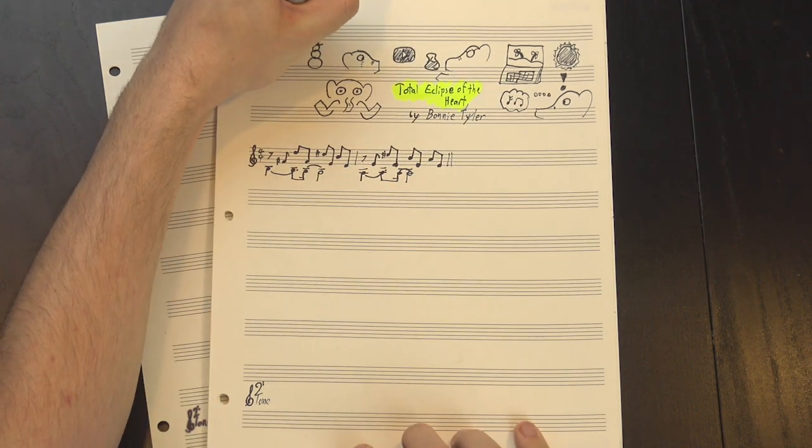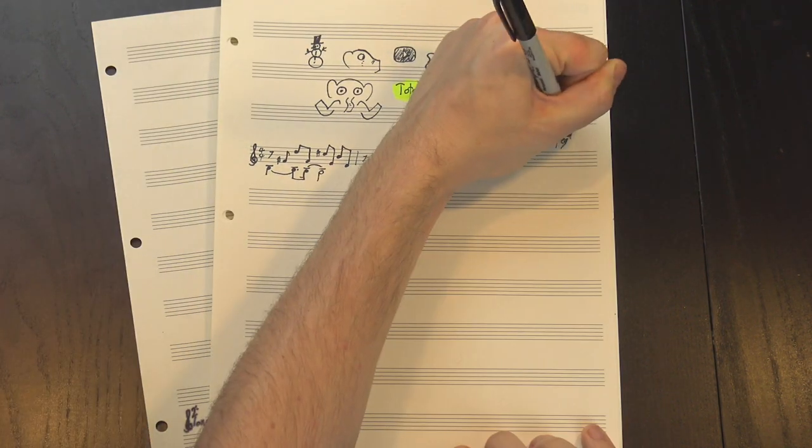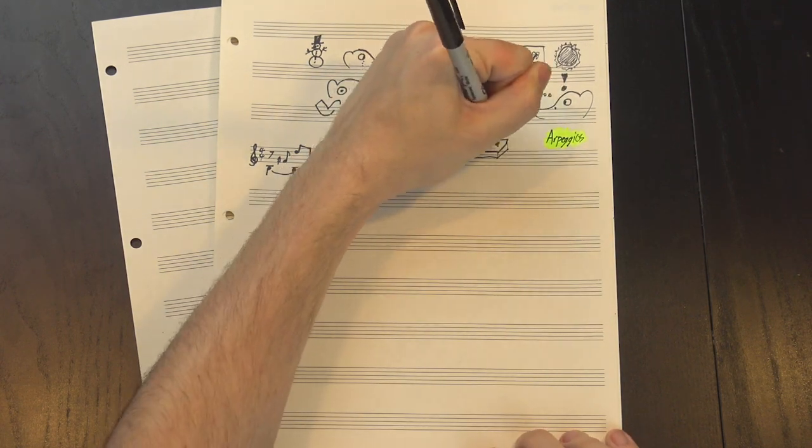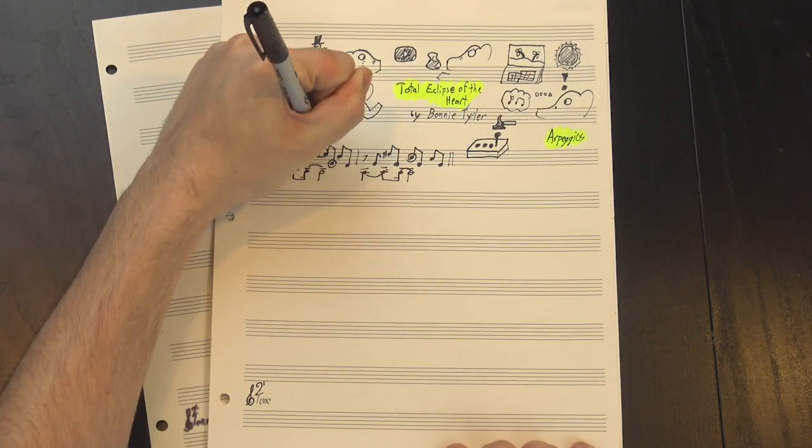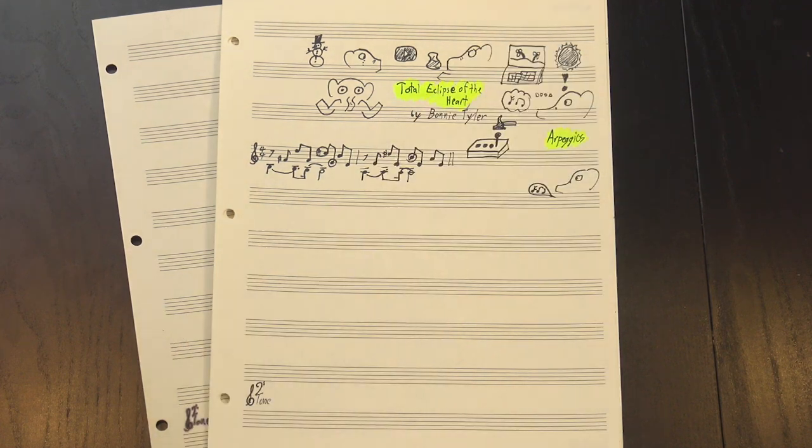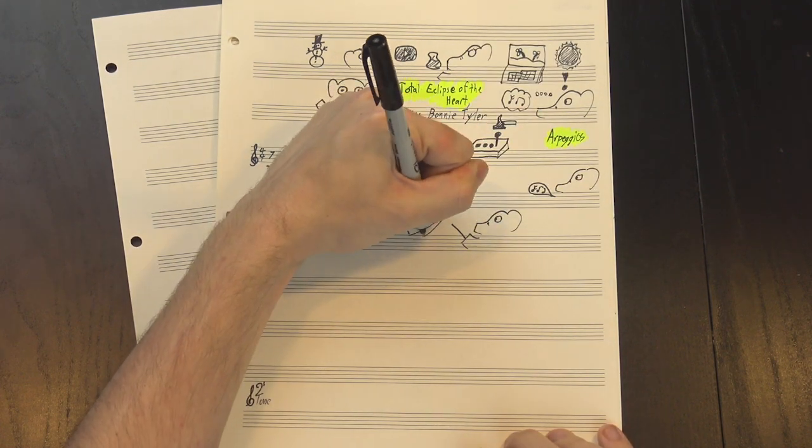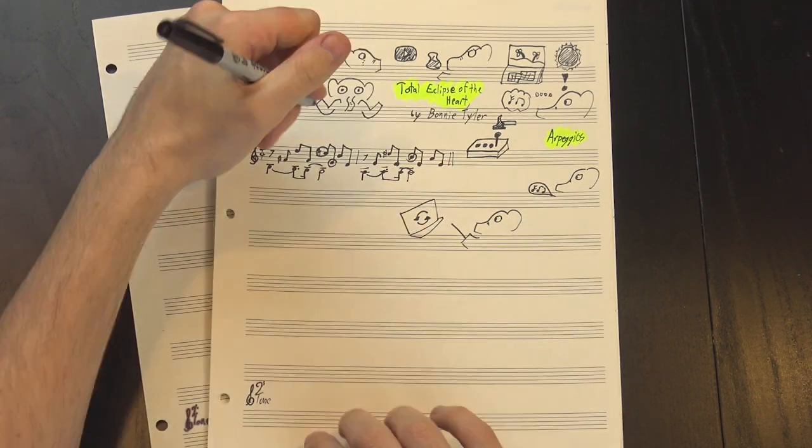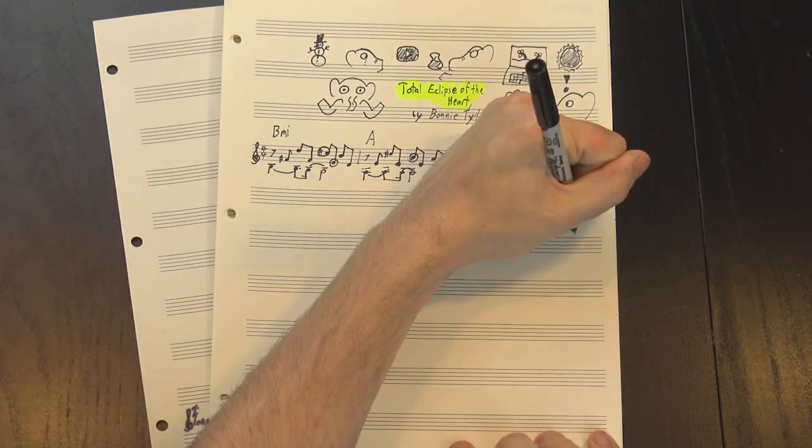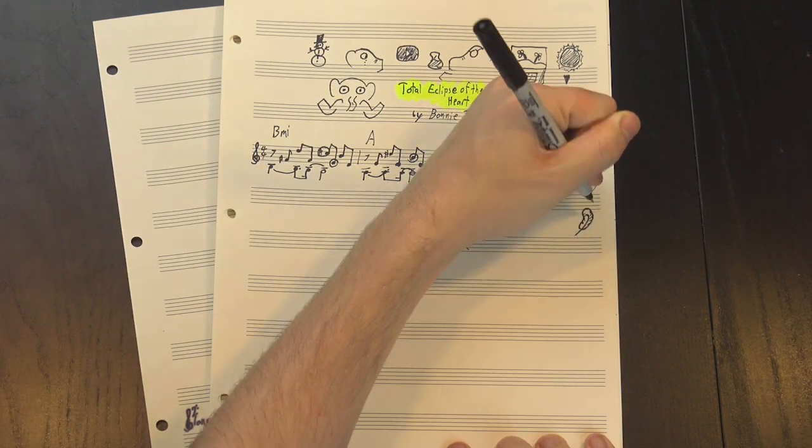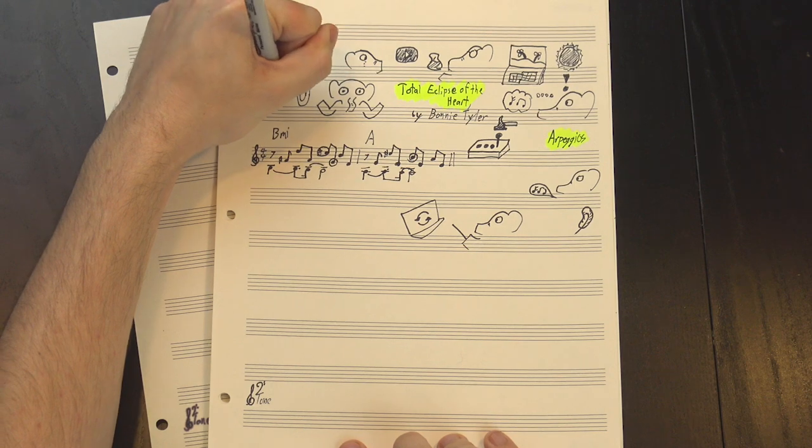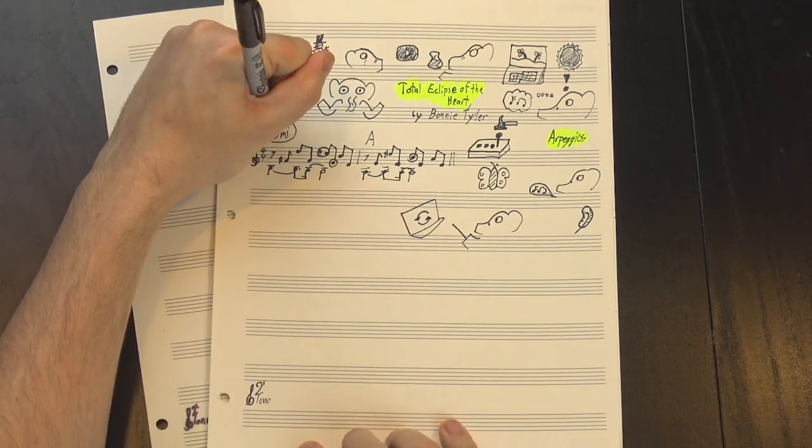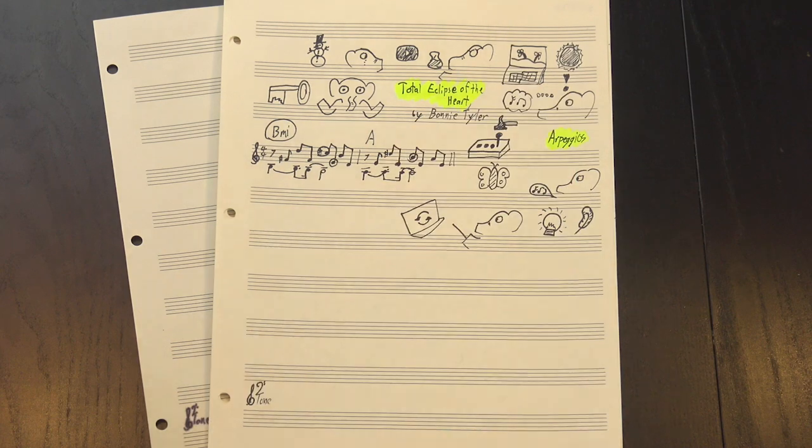And the first thing we need to figure out is the chords. These are what's called arpeggios, where the notes of the chord are played one at a time instead of all at once, and they've got a couple extra notes added in to give it a more melodic feel, but overall, I think it's safe to say that the harmony here is just going back and forth between B minor and A major. This section doesn't have a very strong sense of tonality, which makes it hard to nail down the key, but since the intro before it is just a couple more bars of B minor,